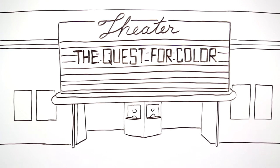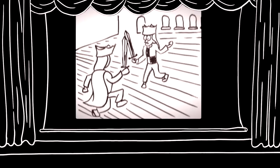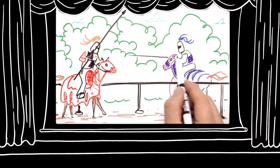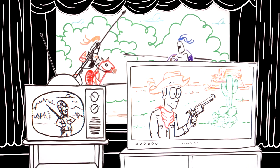The quest for great color has spanned more than a century. It started with black and white silent films before moving to color films, and then eventually to TVs in the home.